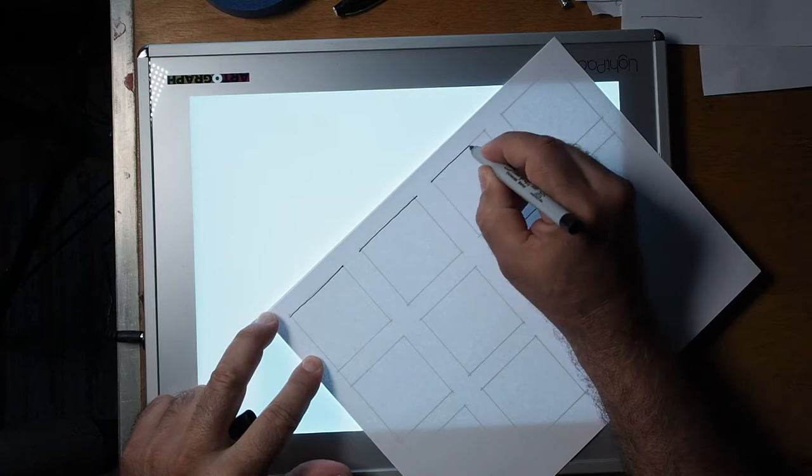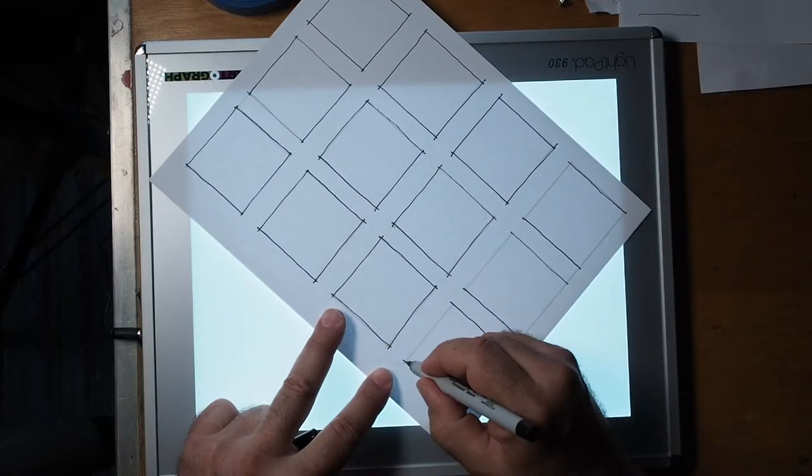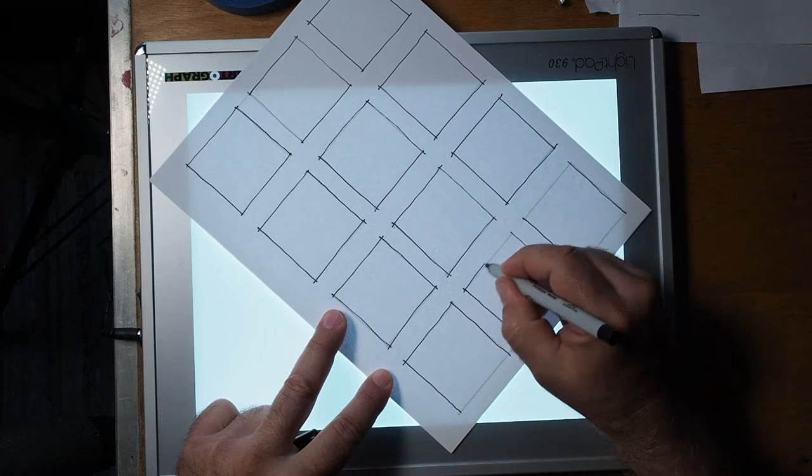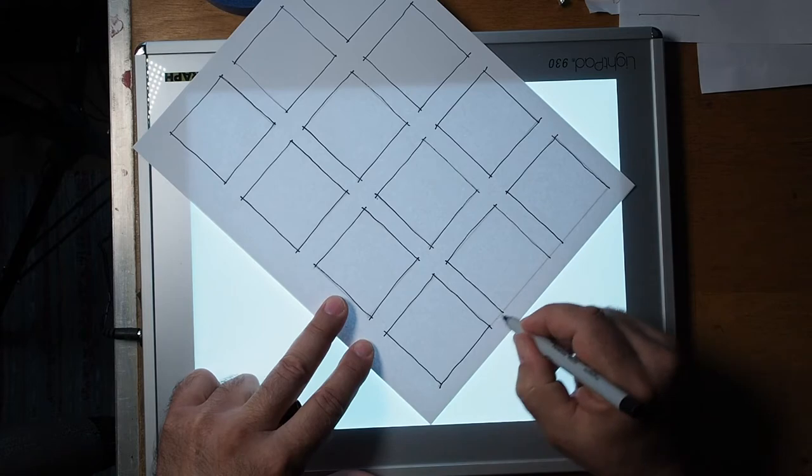I'm just going to freehand these squares, and I'll use a marker just so it's easier to see. The point isn't to be perfect with making a grid or making boxes. The point is to play around with values and textures.